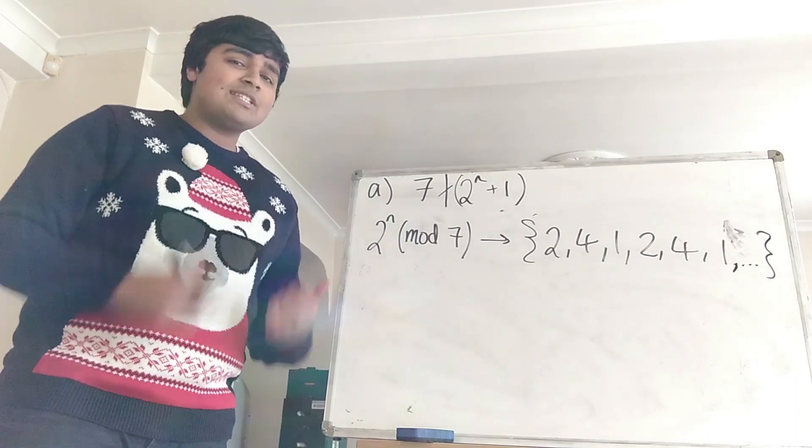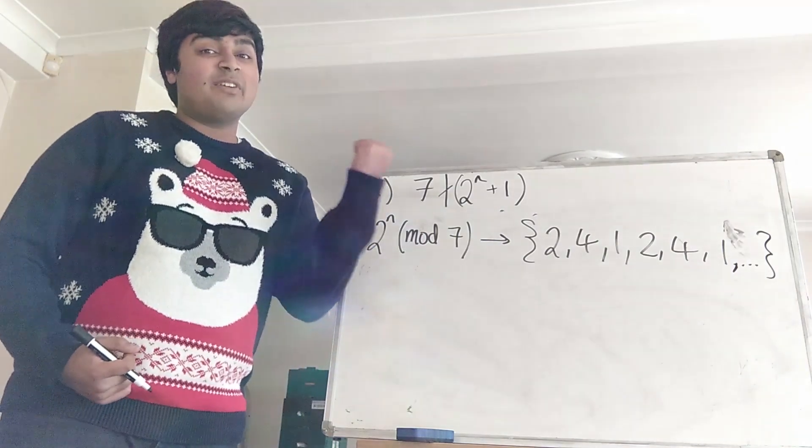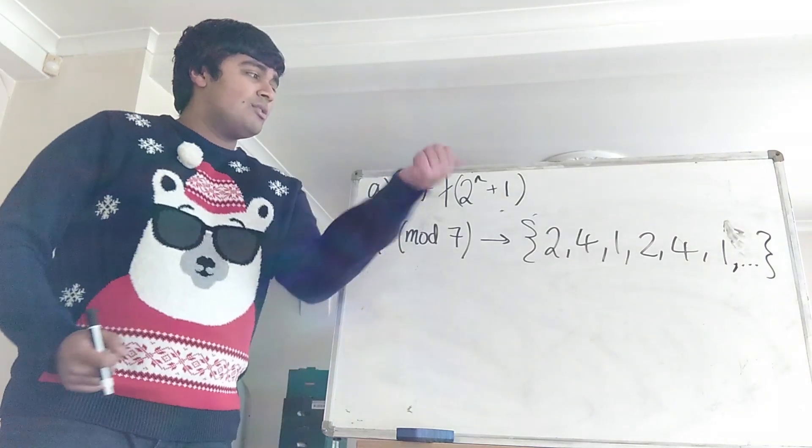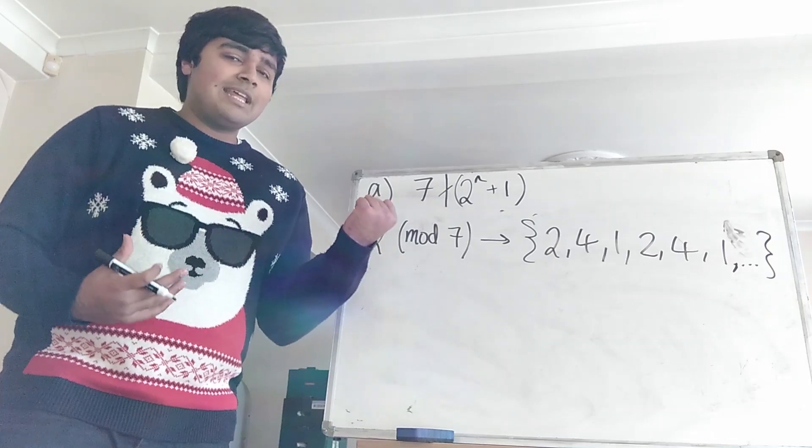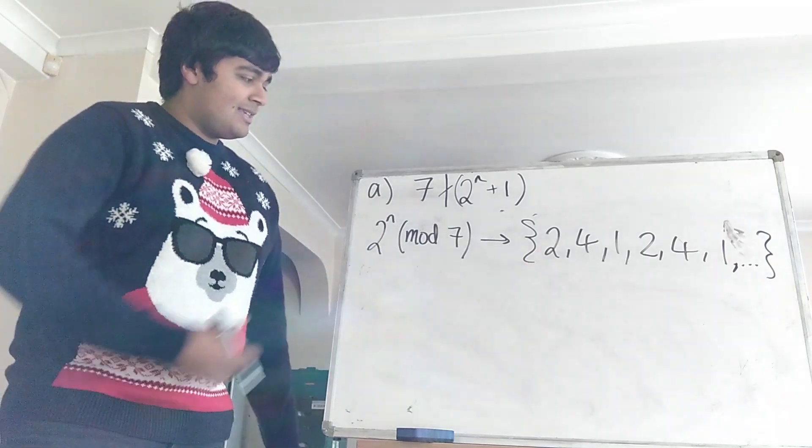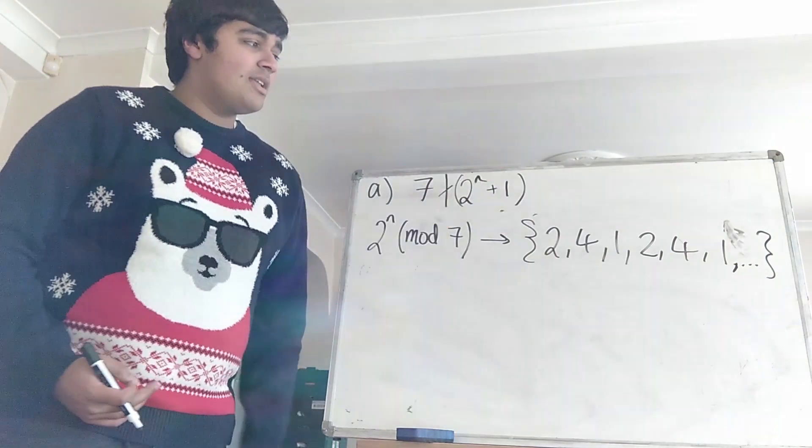Okay, so we saw that the solution to part A was whenever n is a multiple of 3. So whenever n is a multiple of 3, 7 divides 2 to the n minus 1. Now we want to prove that 7 never divides 2 to the n plus 1. So in other words, 2 to the n plus 1 is never a multiple of 7. So we're going to use this result which we just worked out. So 2 to the n mod 7 gives us a sequence 2, 4, 1, 2, 4, 1 and so on.